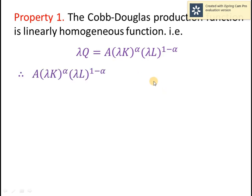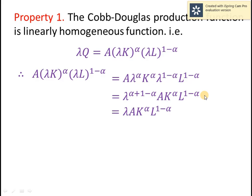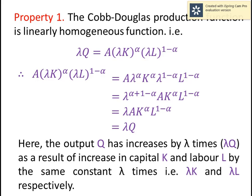Looking at the right-hand side: a*(lambda*k)^alpha * (lambda*l)^(1 - alpha). By expanding it, we ultimately get lambda*q. That is, the output q has increased by lambda times — that is, lambda*q — as a result of increasing capital K and labor by the same constant lambda times, that is lambda*k and lambda*l respectively.